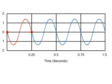In this example, the time it takes to complete one cycle is 0.25 seconds. So this waveform has a period of 0.25 seconds.